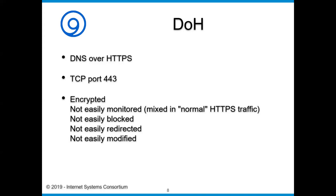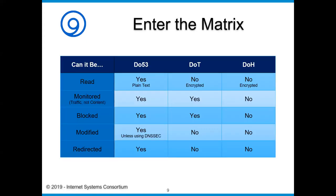DOH is very difficult to redirect and very difficult to modify because it uses very strong encryption. Here is a comparison matrix showing how each technology — DO53, DOT, and DOH — handles the properties: whether it can be read, monitored, blocked, modified, and redirected. For DO53, it can be read, monitored, blocked, modified (unless using DNSSEC), and redirected. DOT and DOH progressively improve on those properties, which matches the information from the previous slides.